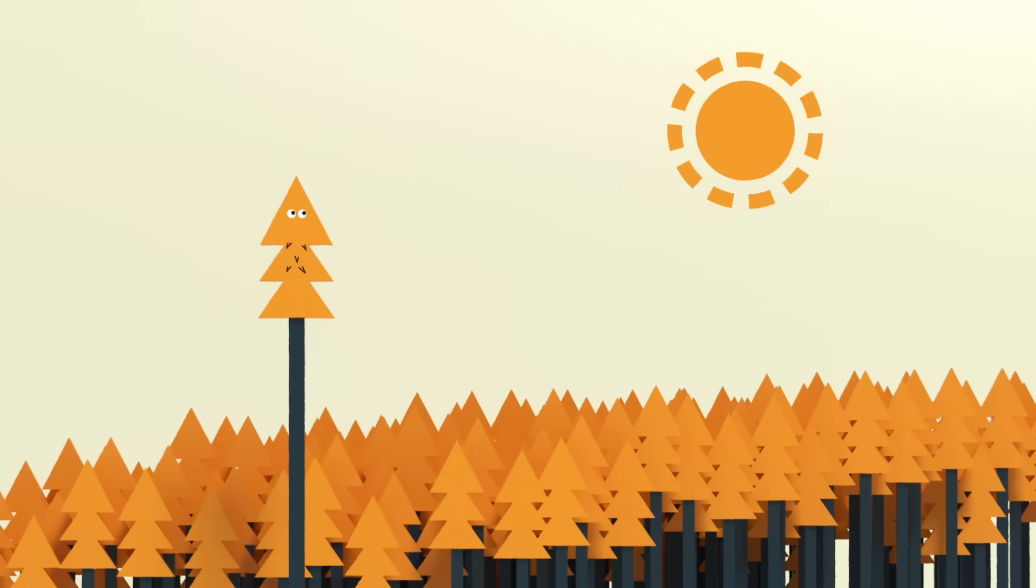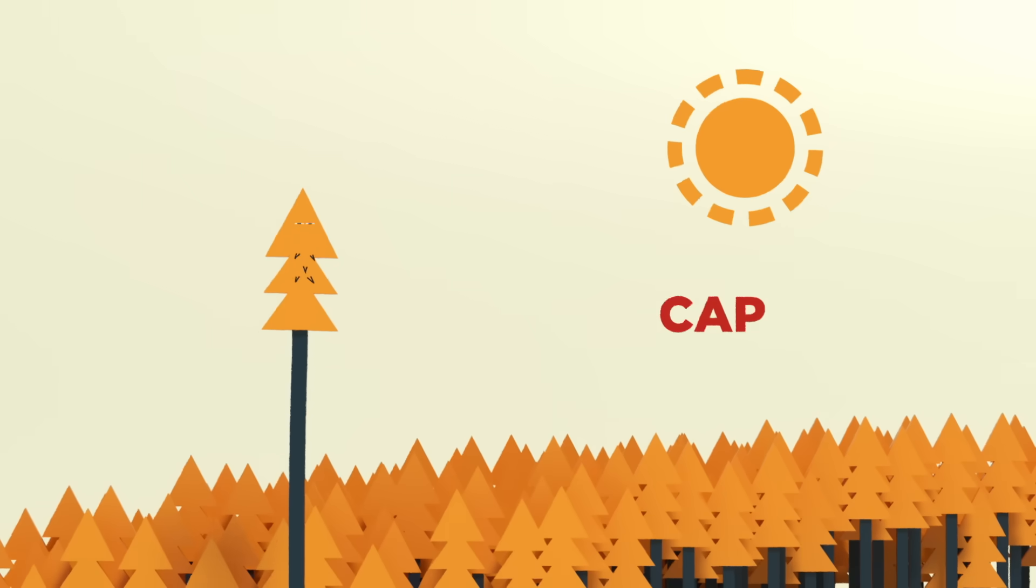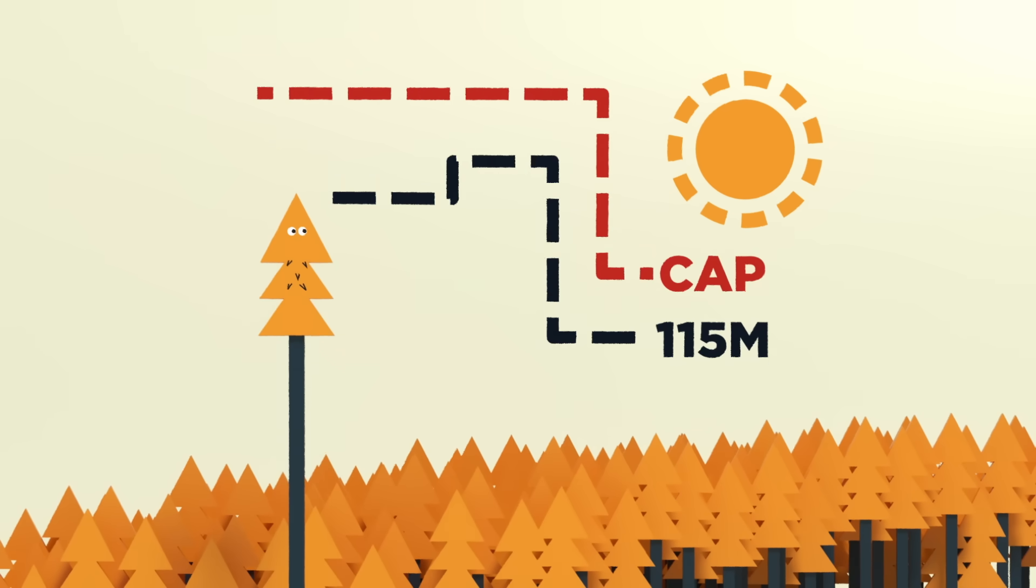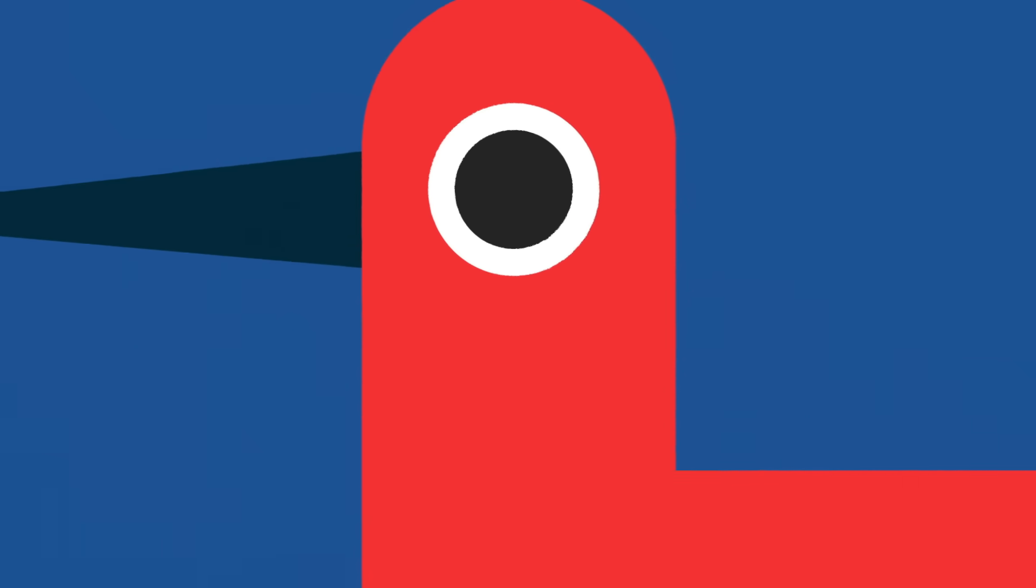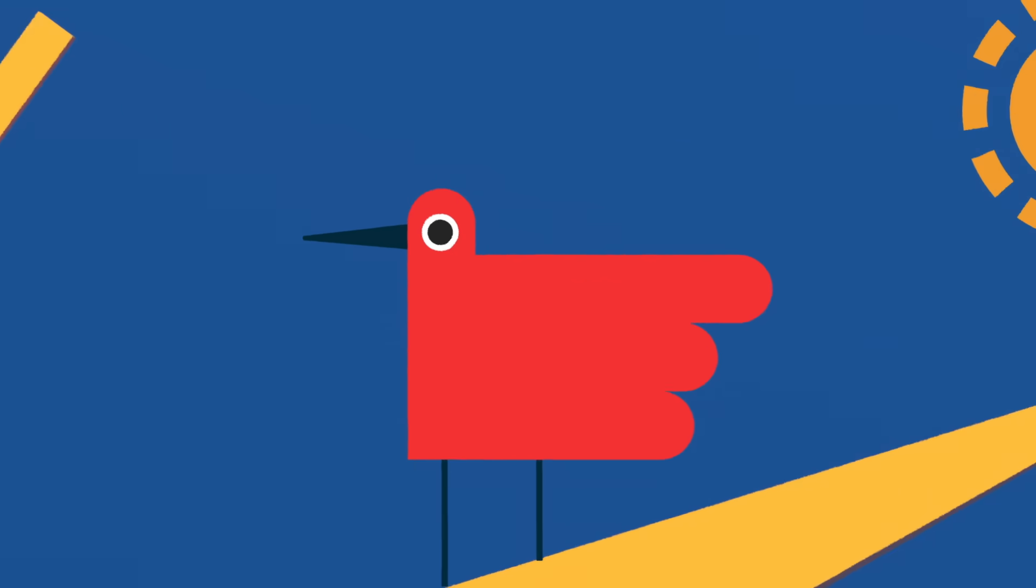Researchers are still investigating the possible explanations for this limit, and there may not be one universal reason why trees stop growing. But until we learn more, the height of trees is yet another way that gravity literally shapes life on Earth.